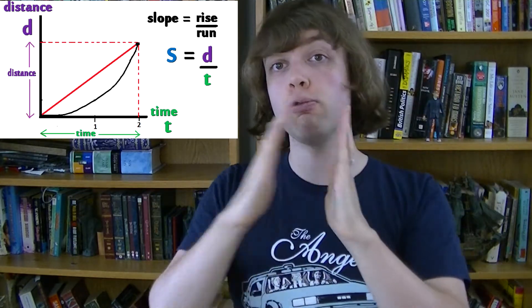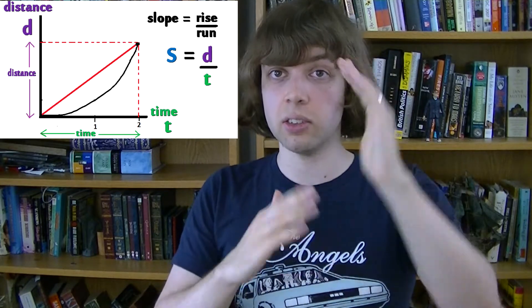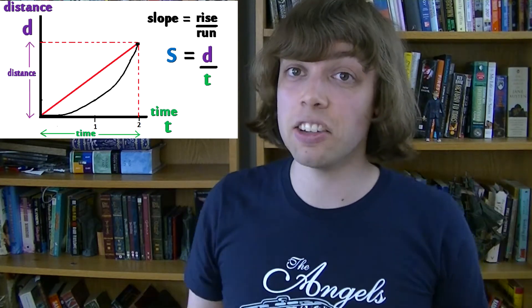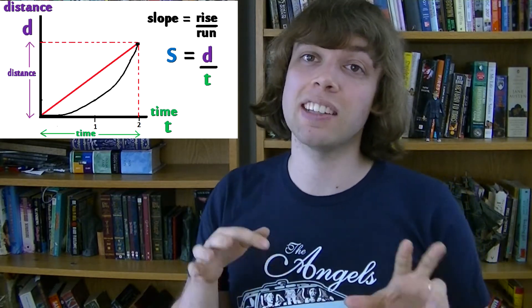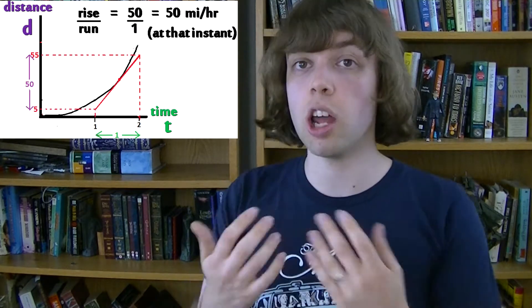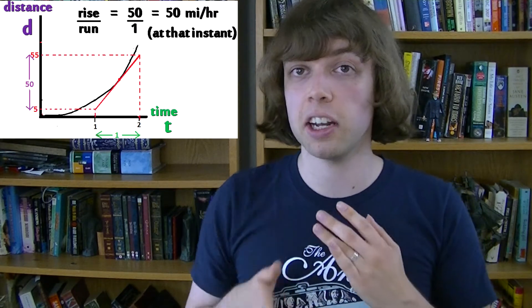Slope is rise over run, which in this case is distance over time. Distance divided by time is speed. To get your instantaneous speed at a particular point in time, you would have to take a tangent of the curve and find the slope of that line. So you draw a line that just touches the curve at a particular point in time.